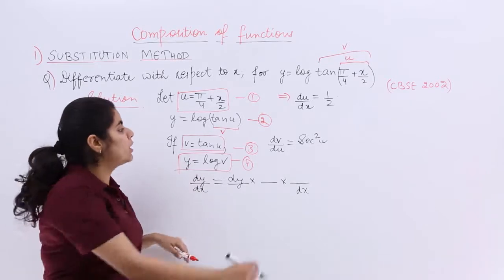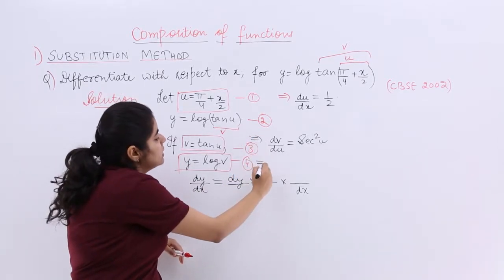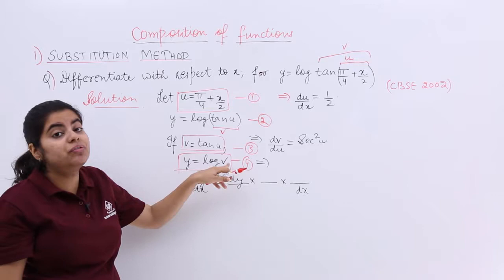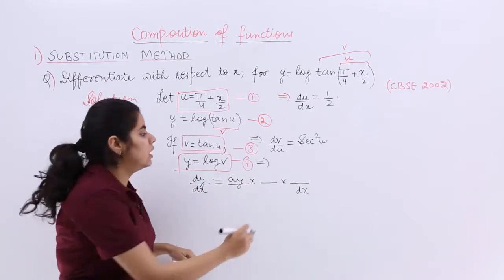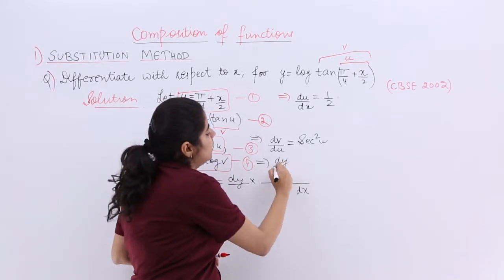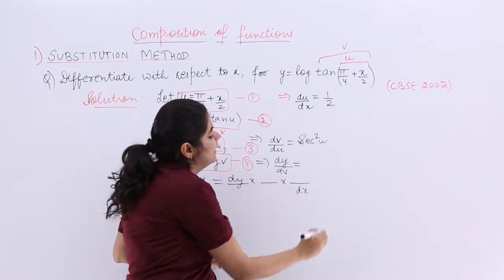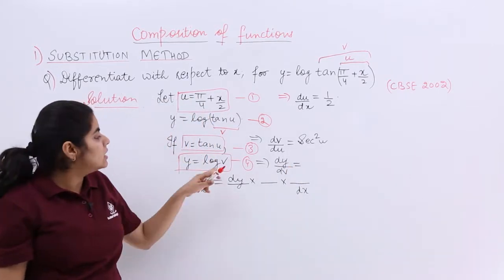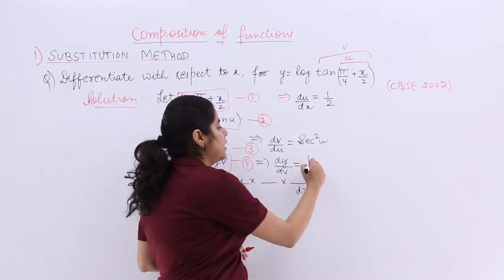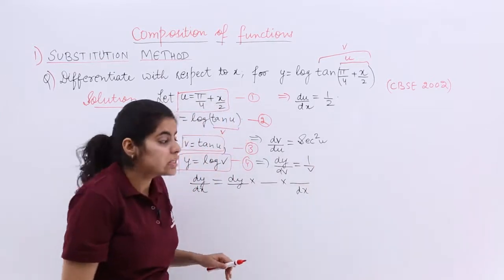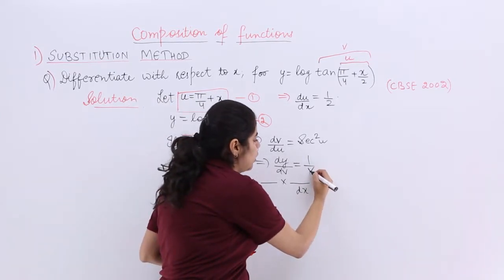Last but not the least, from equation number 4 let's write differentiate with respect to v because y and v are here. So let's write differentiate with respect to v. So it becomes dy by dv and log v is nothing but 1 upon v. So these are some answers that we have got.